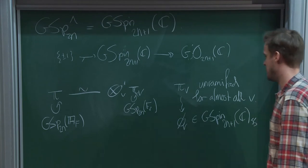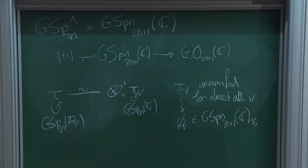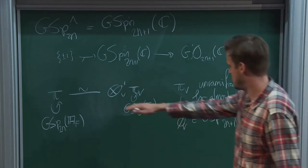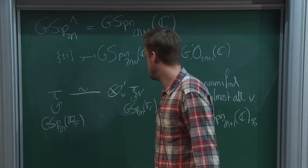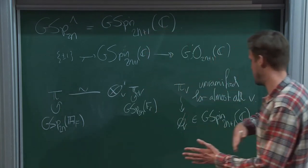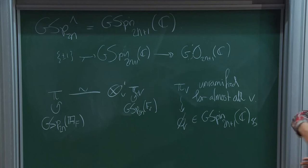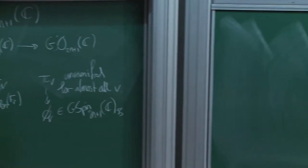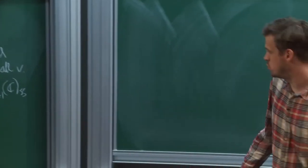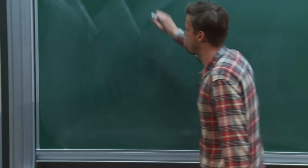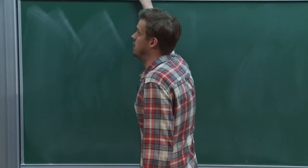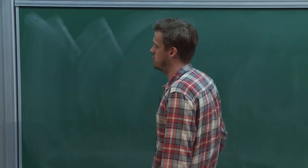The point of this dual group is that if you have an automorphic representation pi of GSp(2n), then you can decompose it into a restricted tensor product of local representations, which will be unramified for almost all places. In those cases the representation is classified by some semisimple conjugacy class in this dual group — that's how this dual group arises in the picture.